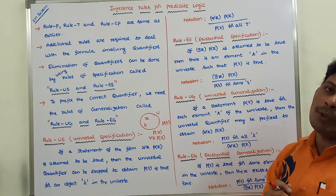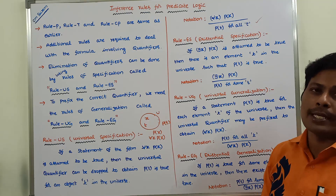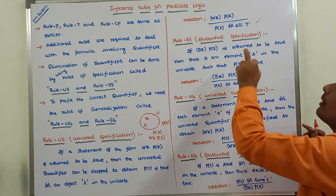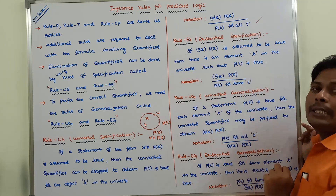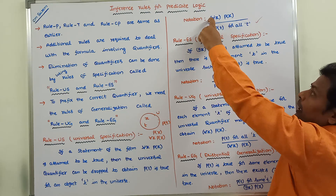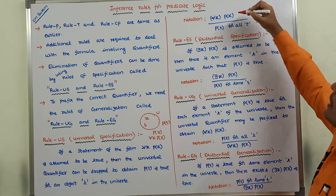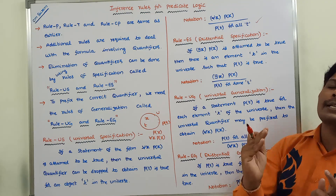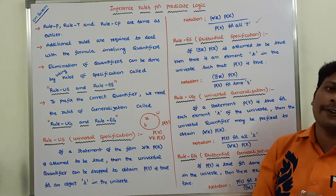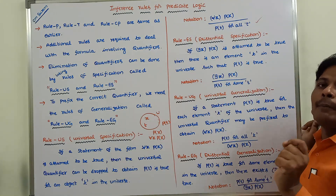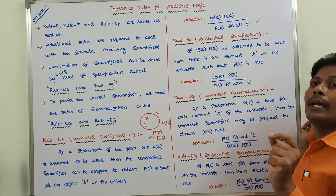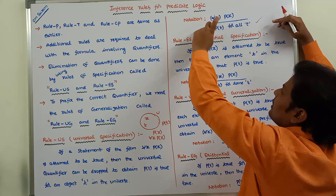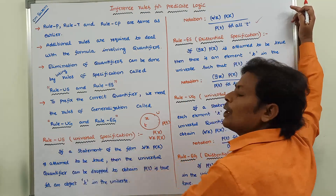This is called rule US. The universal quantifier can be eliminated because P of t is true for all t. Whenever we remove the universal quantifier, we can take another object t in the universe. So ∀x P(x) implies P(t) — we drop the universal quantifier. To eliminate the universal quantifier, we use rule US.